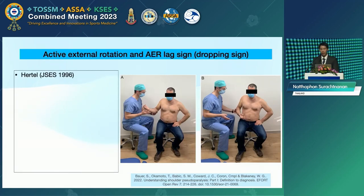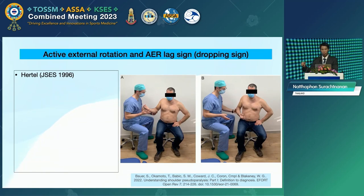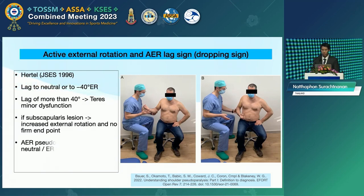The active external rotation lag sign, described in 1996, assesses active and passive external rotation with the arm by the side in 20 degrees of abduction. The elbow is supported before positioning the arm in maximal passive external rotation. The patient is asked to maintain this position before release, and the lag in external rotation is recorded. This is the most accurate test for infraspinatus function. A lag of more than 40 degrees is considered positive. The test must be interpreted with care if the subscapularis tendon is also torn, as it may show increased external rotation with no firm endpoint.